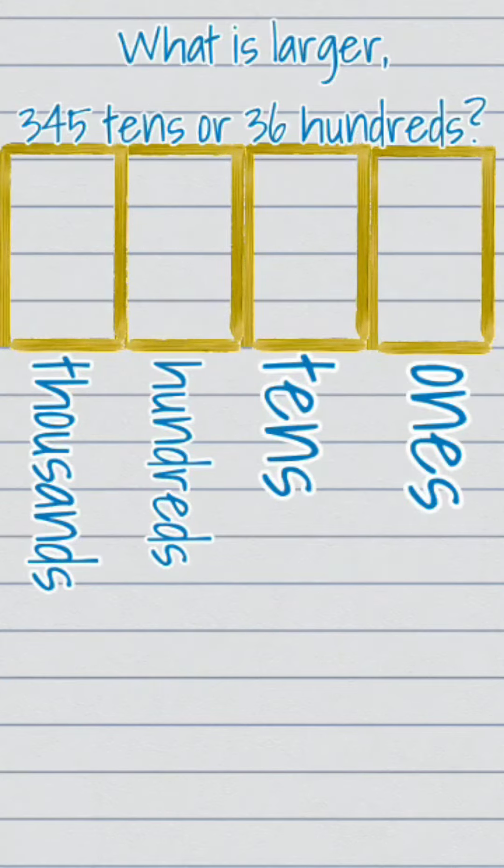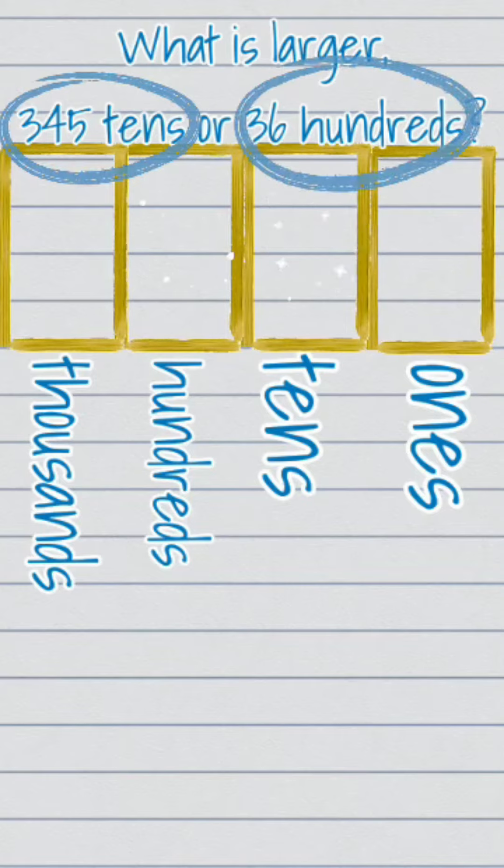Here goes, what is larger, 345 tens or 36 hundreds?